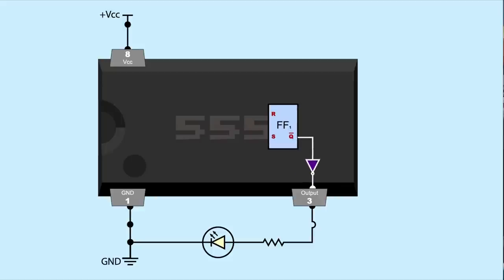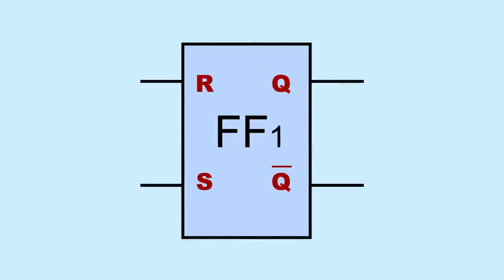Inside the 555, the output pin is tied to the output of a flip-flop. A flip-flop's two inputs are set and reset. The two outputs are Q and not-Q. They are inverse of each other. When Q is high, not-Q is low. And when Q is low, not-Q is high.